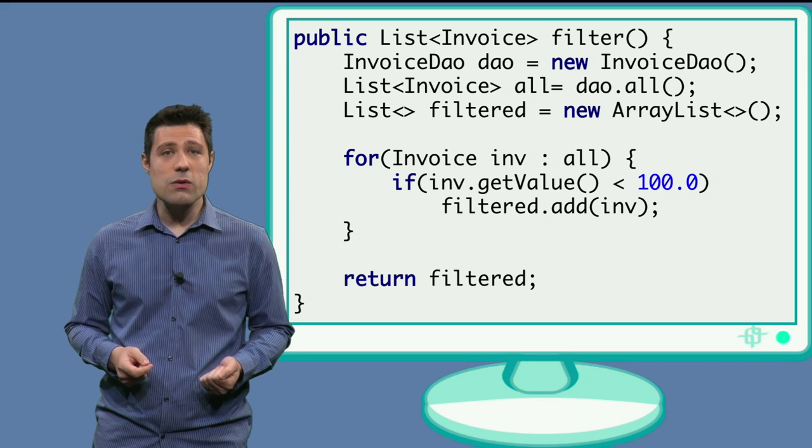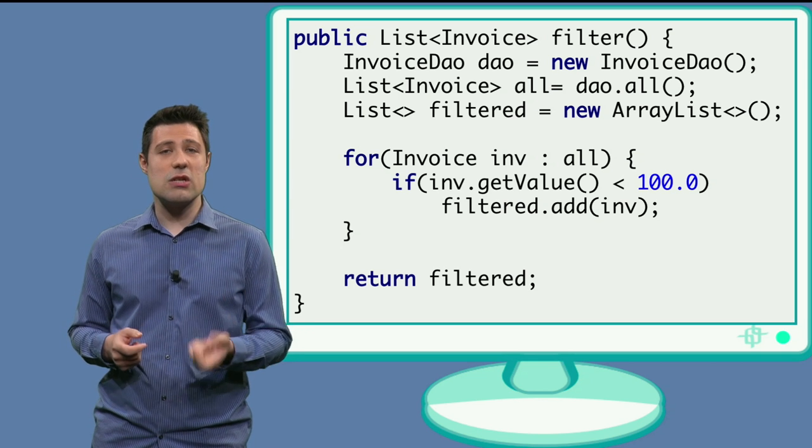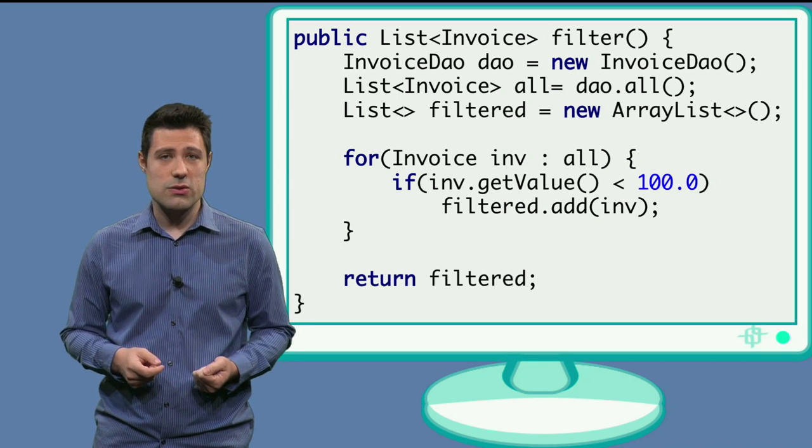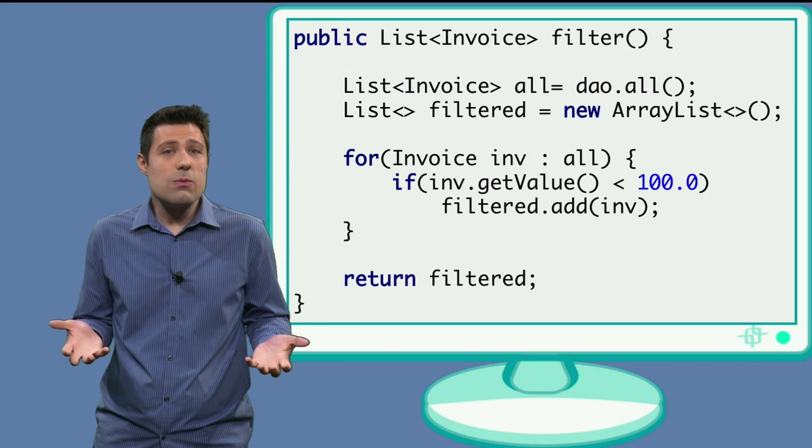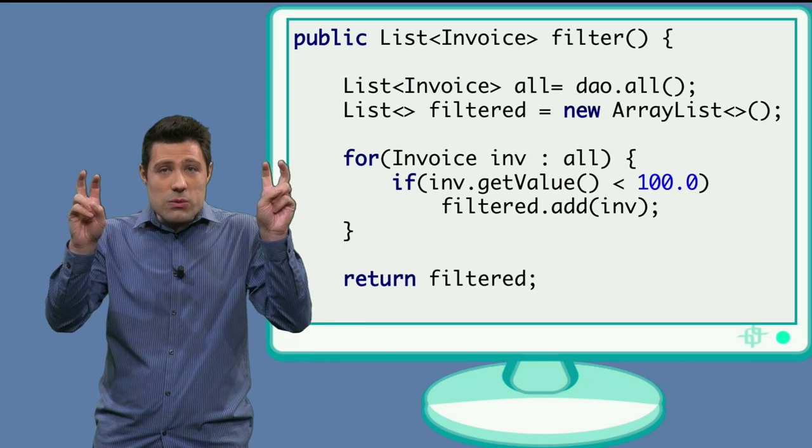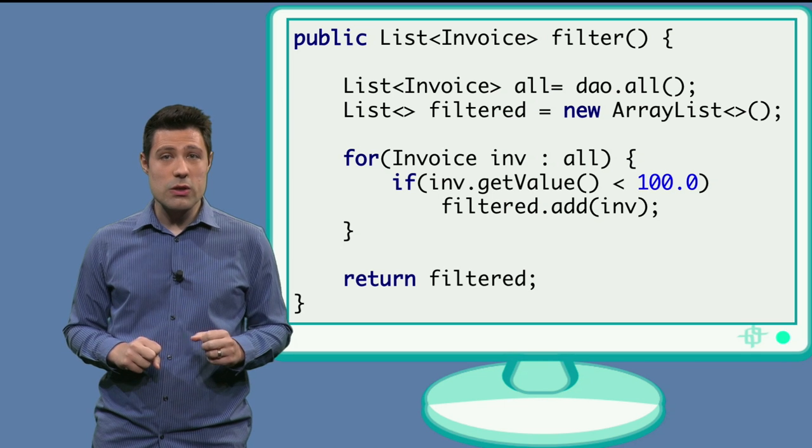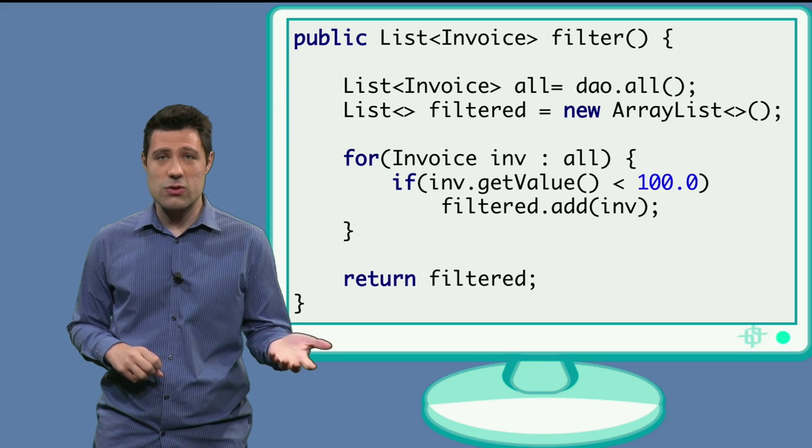So, if we go to the production code, we need to get rid of the instantiation of the database object class. We cannot do this anymore because if we do this new there, this means we are always going to use the real database. And that's not what we want.